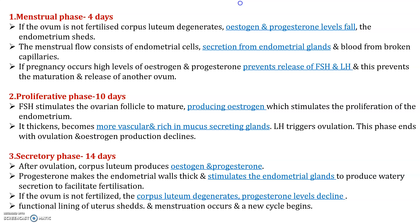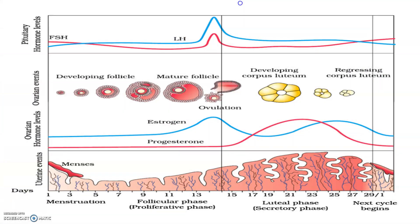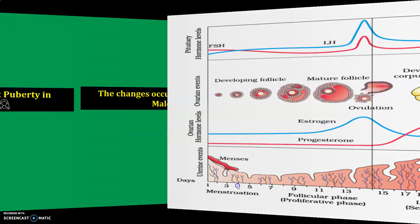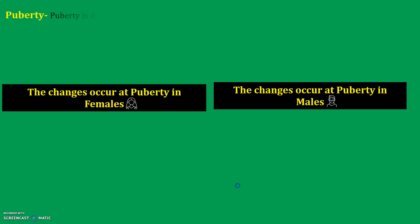If you see the graph containing FSH and luteinizing hormone (LH), observe the level of the graph against the dates. There are also the ovarian hormones — estrogen and progesterone. From left to right on the graph, you see the formation of eggs, then ovulation, and after the development of the corpus luteum it returns to the next cycle. These are the structural changes occurring through the cycle.